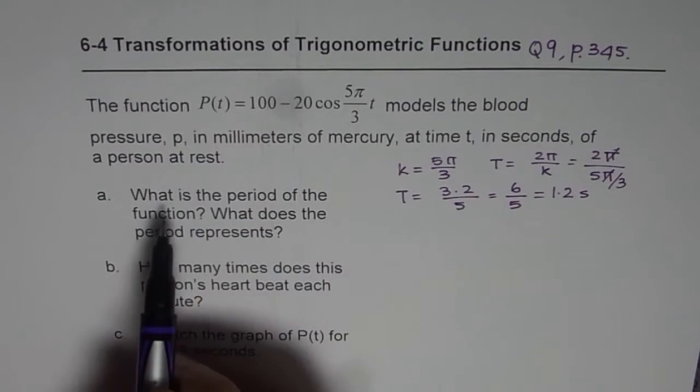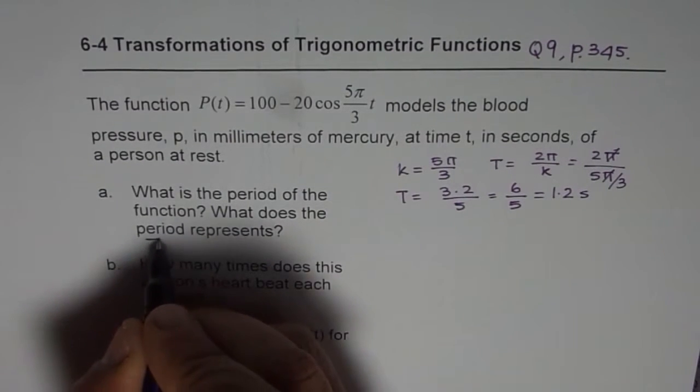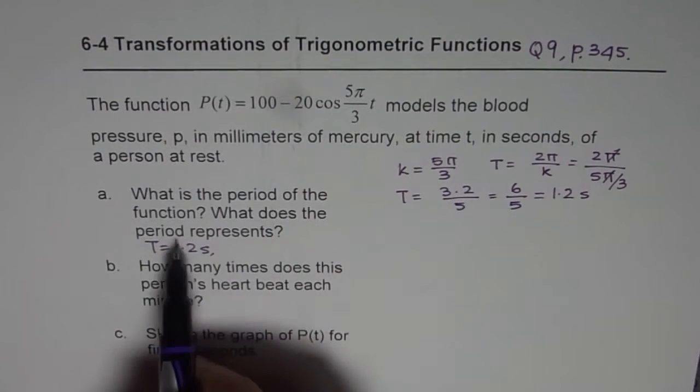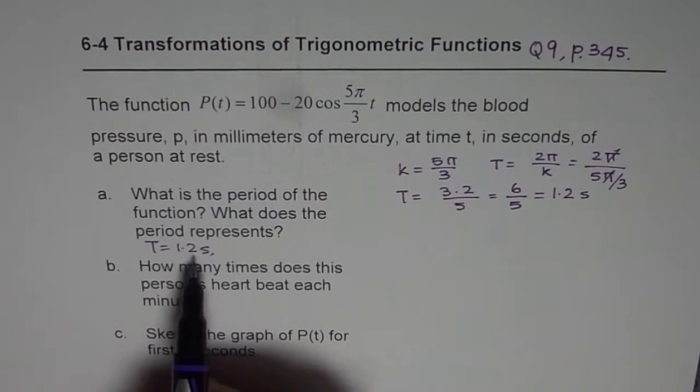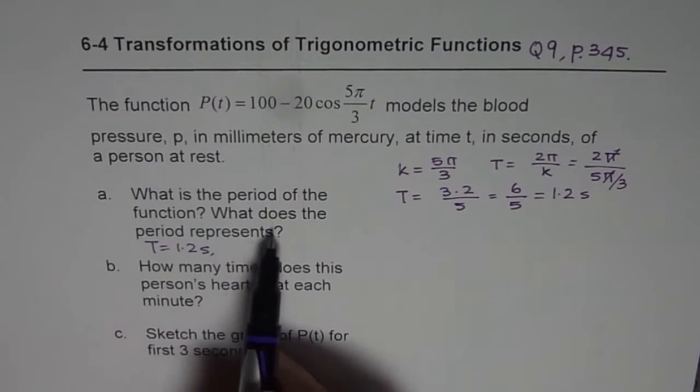So that's your answer for what is the period of the function. Period of the function is 1.2 seconds, T = 1.2 seconds. Now, what does the period represent? It's the time difference between two heartbeats. That is what it represents.